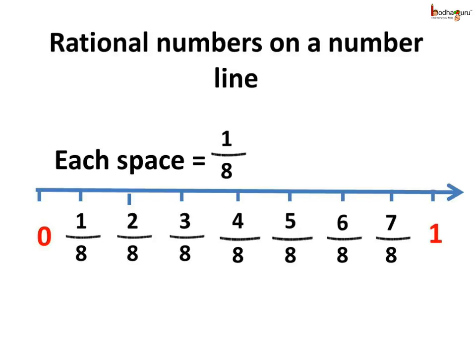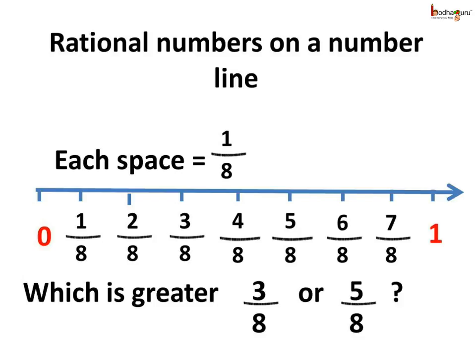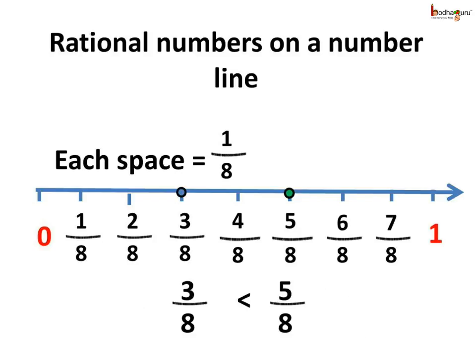Now let us see how to compare rational numbers. Which is greater: 3 by 8 or 5 by 8? Well, 5 by 8 lies on the right side of 3 by 8. Hence, 5 by 8 is greater than 3 by 8. So we can write 3 by 8 is less than 5 by 8.